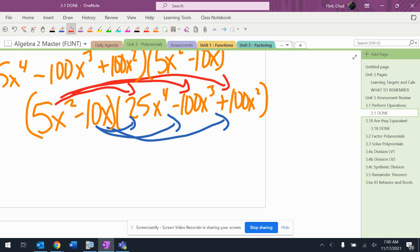All right, so let's go careful here. 5x squared times 25x to the fourth is definitely x to the sixth. 5 times 25 is 125, so 125x to the sixth. 5x squared times negative 100x to the third is negative 500x to the fifth. 5x squared times positive 100x squared is positive 500x to the fourth.